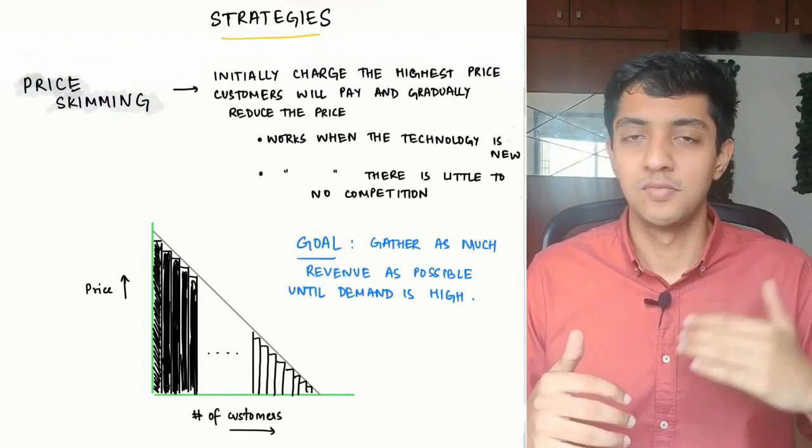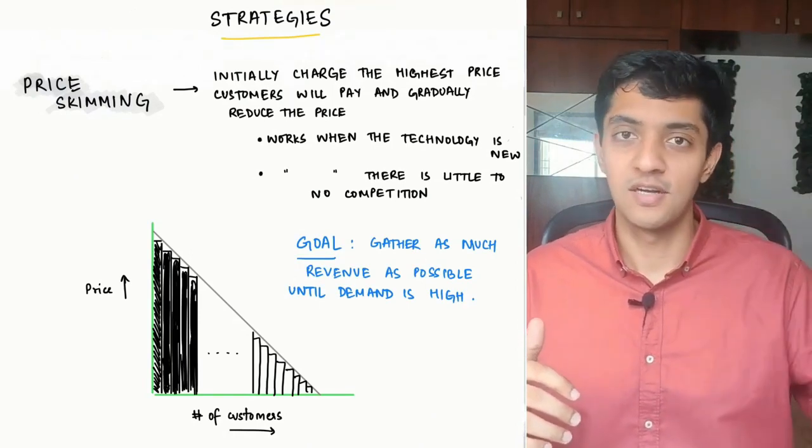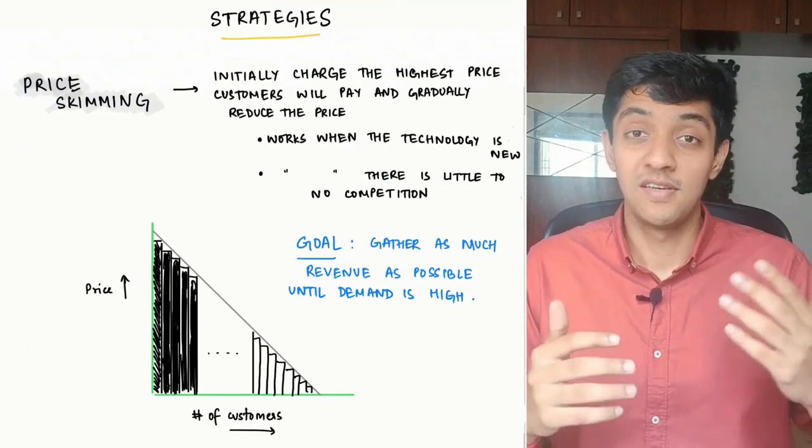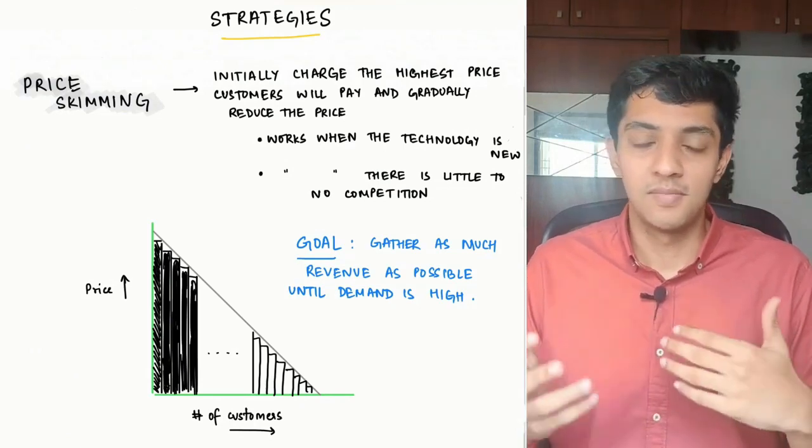Like I said, you often notice this with mobile phones. A mobile phone that's priced at 50,000 to start with, after six to eight months, you see it come down to 40,000. And then after maybe a year, a year and a half, you see it probably come down to 35,000.